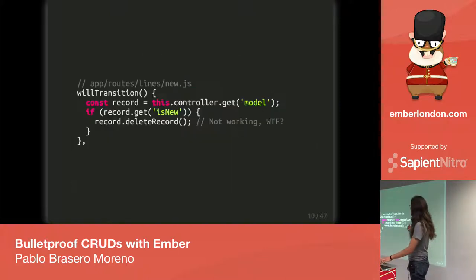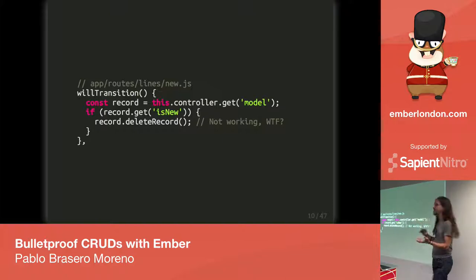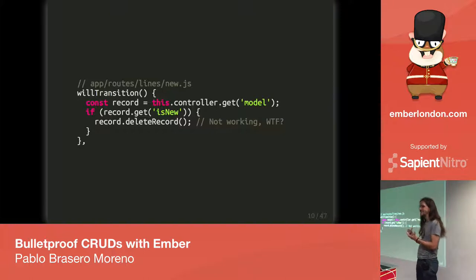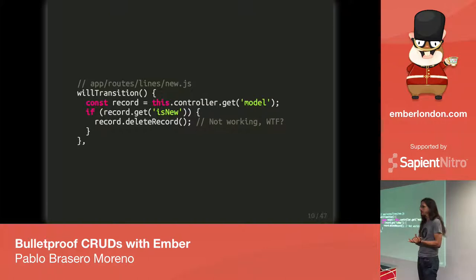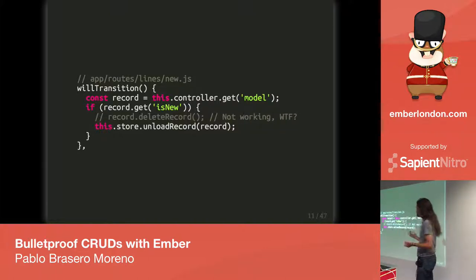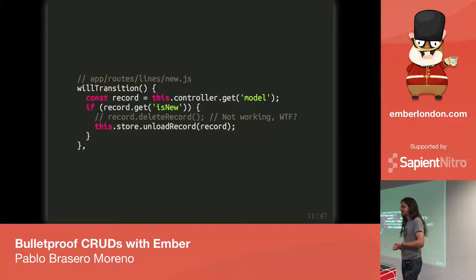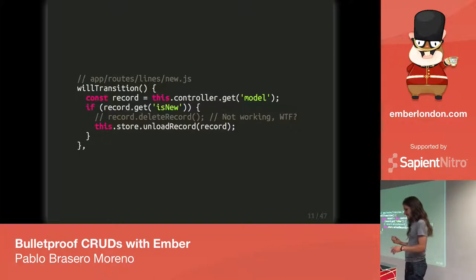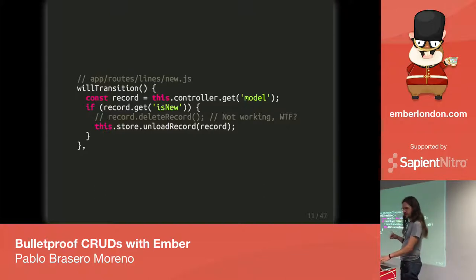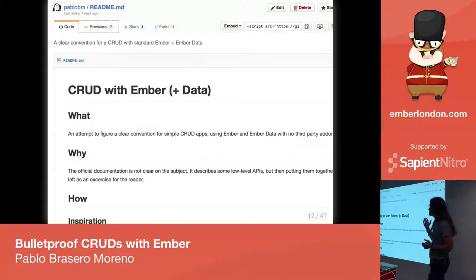The code I had for dealing with that case — transitioning away without having saved the record — for some reason deleteRecord wasn't working. I read the documentation many times and couldn't see what was wrong. Eventually I saw a clue suggesting using unloadRecord instead, and it worked. It annoyed me a bit and I made a note of it.